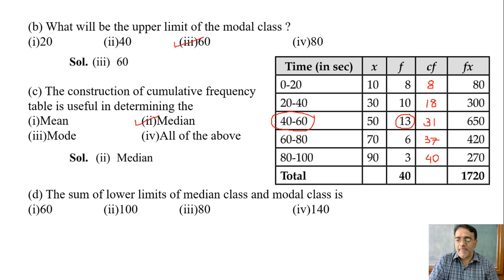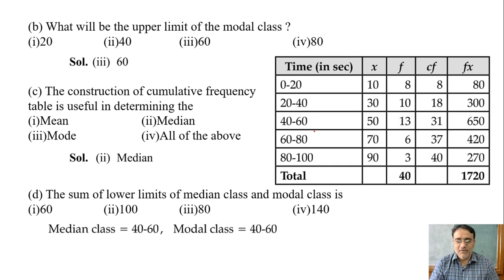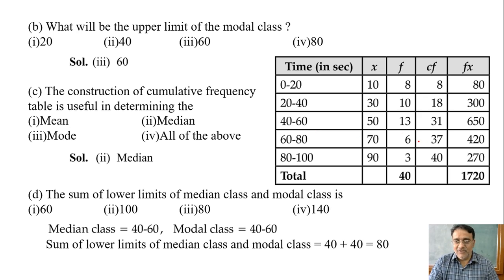40 by 2? 20. So which CF is just greater than or equal to 20? 31. So median class is also 40 to 60. Model class is also 40 to 60. So the lower limits of both is 40. So what is the sum? 80. So correct answer is option 3, third option.